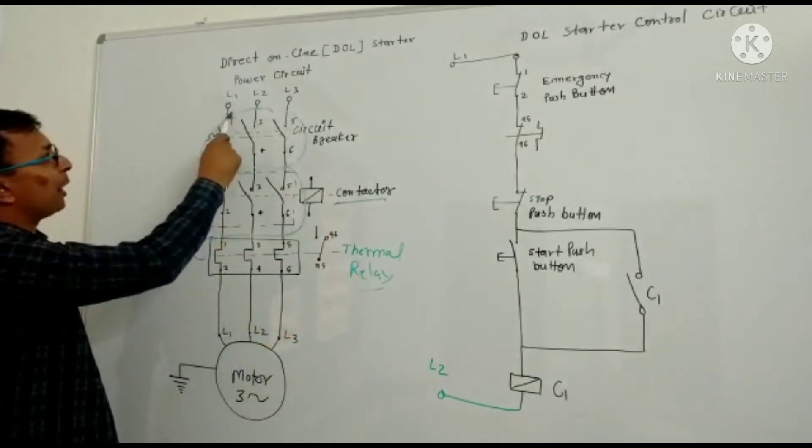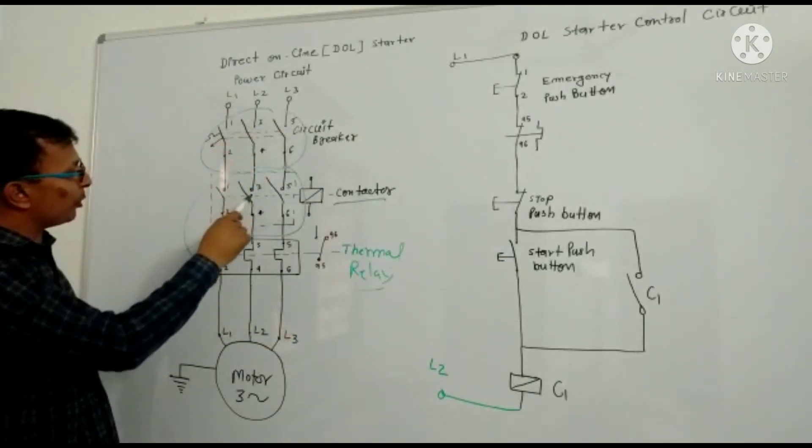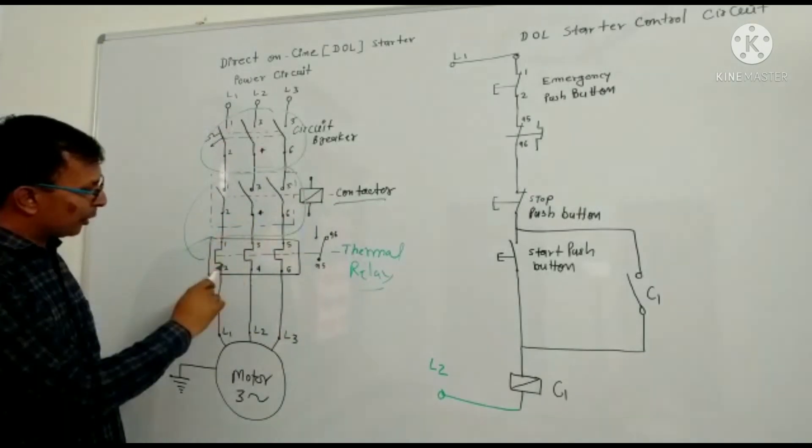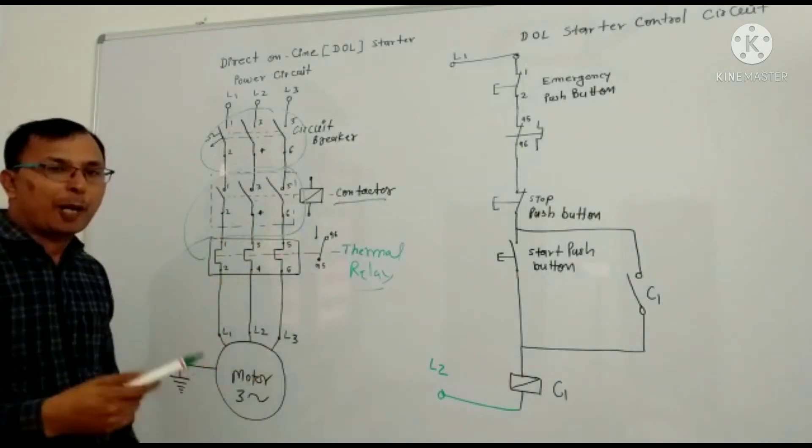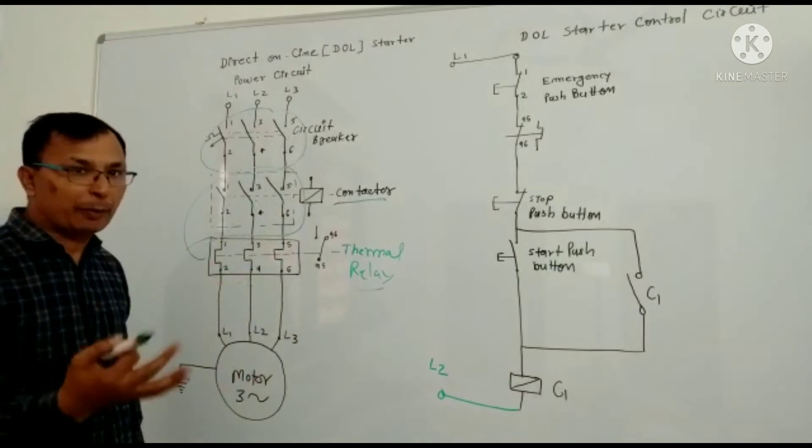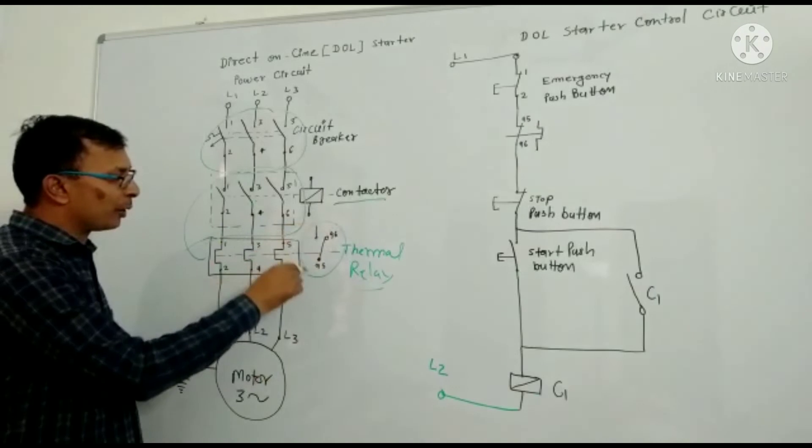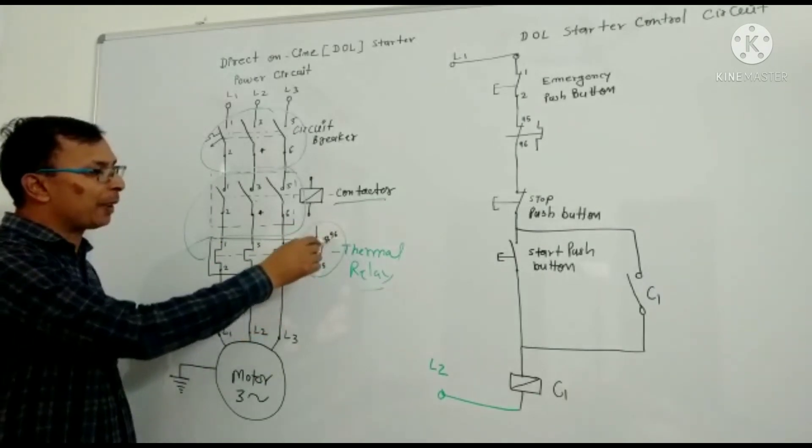Now let us see the Relay Supply and L2, L3. It is the MCCB. When this contact is on, then we will get the relay. This is the Contacts of Relay, 95 to 96.